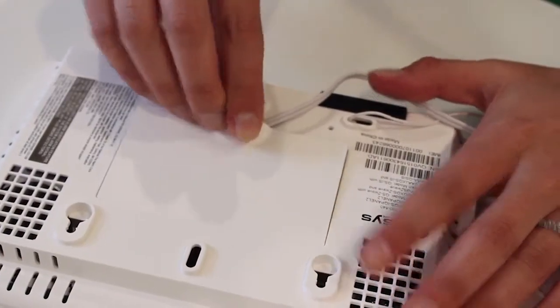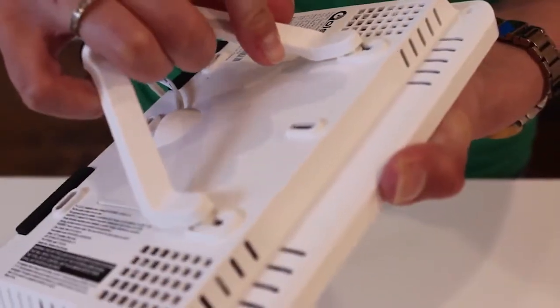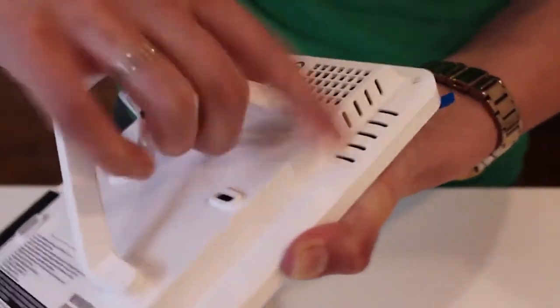Replace the rear access cover by pressing down until you hear a click. Snap the included table stand into the slots in the back using firm pressure until you hear a click.